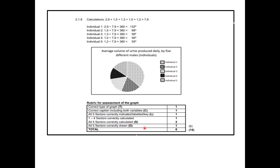The calculations are very important. For individual one: 2.9 divided by 7.9 (which is the total) multiplied by 360 gives you degrees. Make sure you round off your degrees when drawing your graph. Each calculation follows the same formula — take the individual's value divided by the total of all values and multiply by 360. Individual one was 2.9, the total is 7.9, so 2.9 ÷ 7.9 × 360 gives you your degrees.